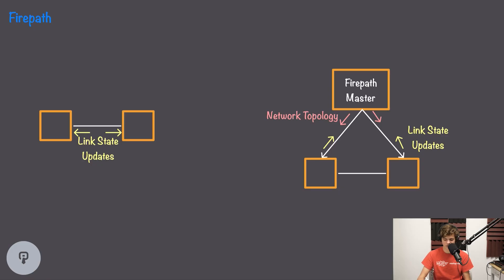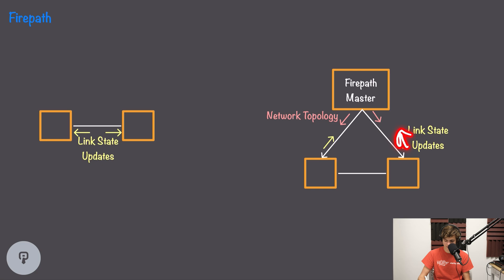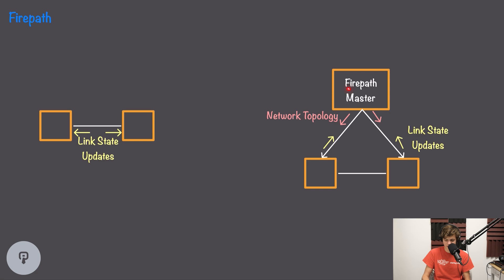Google's data center network is uniquely static — once designed, each switch plays a specific role, and the entire topology can be defined in software. Google chose to store the network topology centrally in a service called the FirePath master, which communicates topology down to the switches. Switches then report link state updates back — such as when an interface goes down — and those updates are communicated to any affected switches. Even though topology is stored centrally, switches still make independent routing decisions based on updates from FirePath, enabling very fast convergence when a link fails.